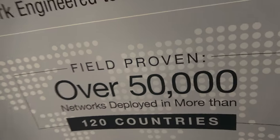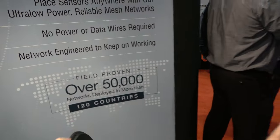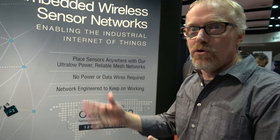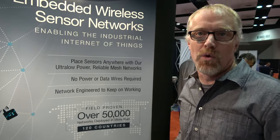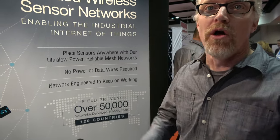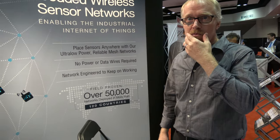Dust Networks has over 50,000 networks deployed in more than 120 countries. We have many customers in large-scale production who deploy networks all over the world. Our biggest market is industrial sensing — refineries, gas processing plants, oil wells, and factories.